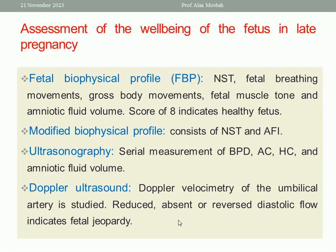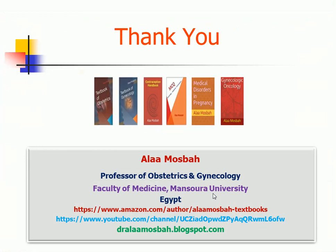Lastly, Doppler ultrasonography. Doppler velocimetry of the umbilical artery is studied. If Doppler velocimetry of the umbilical artery is found to be reduced, absent, or reversed end-diastolic flow, this indicates fetal jeopardy — the fetus is at risk. If it is reversed end-diastolic flow, it is an emergency situation. This concludes the assessment of the well-being of the fetus in late pregnancy. Thank you, everybody.